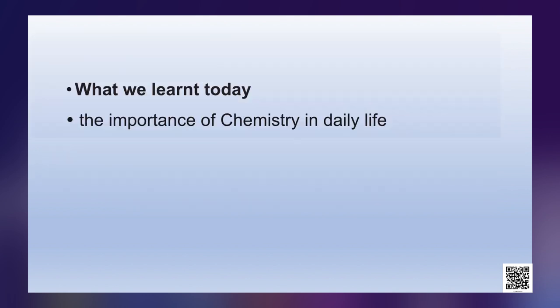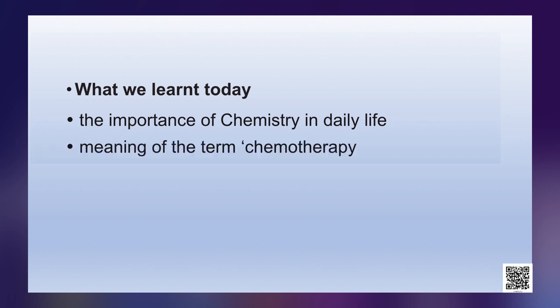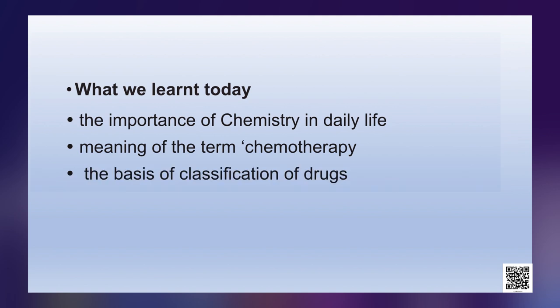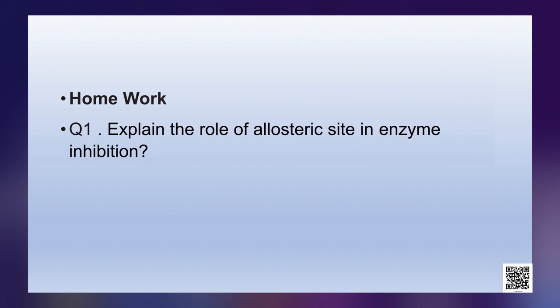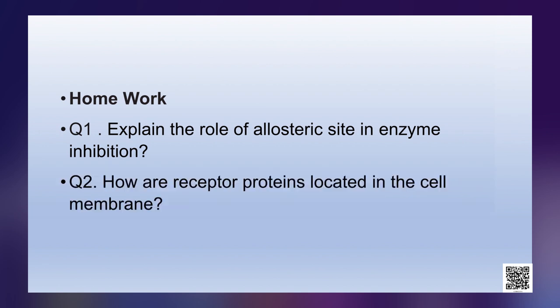Today we have learned the importance of chemistry in daily life, the meaning of chemotherapy, the basis of classification of drugs, and drug-target interaction of enzymes and receptors. Homework: Question 1 — explain the role of allosteric site in enzyme inhibition. Question 2 — how are receptor proteins located in the cell membrane? In the next session we will discuss the therapeutic action of a few classes of drugs, artificial sweetening agents, and cleansing agents.